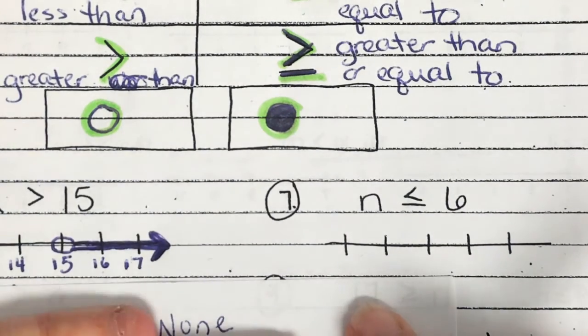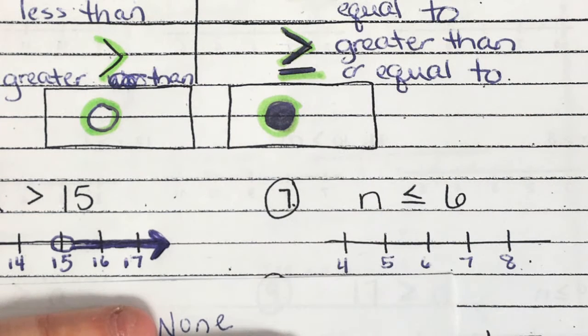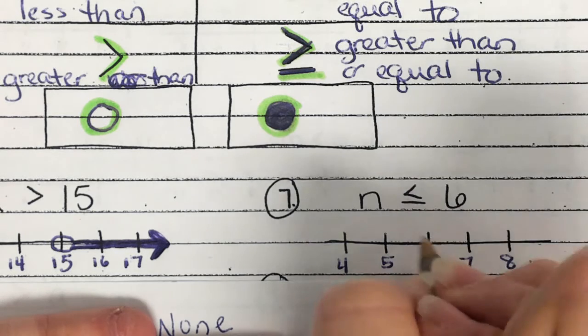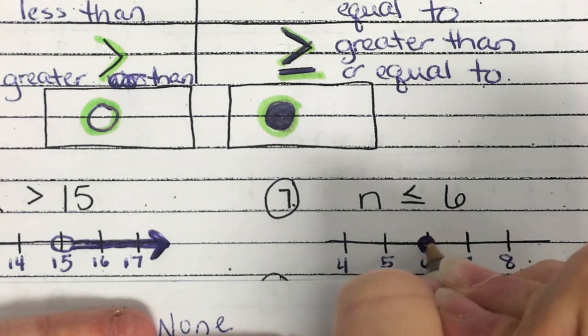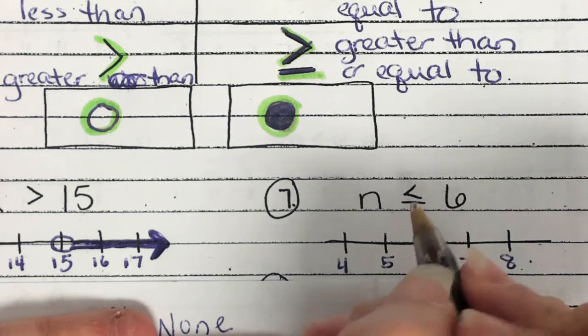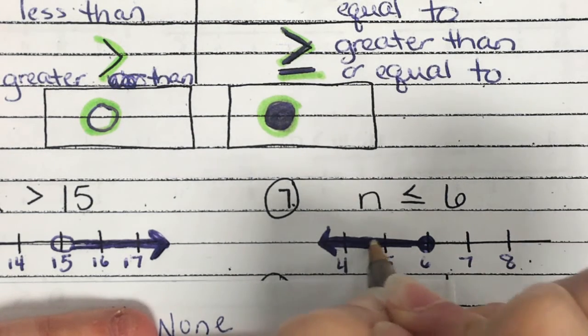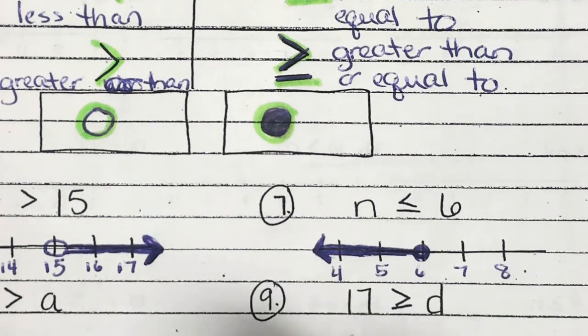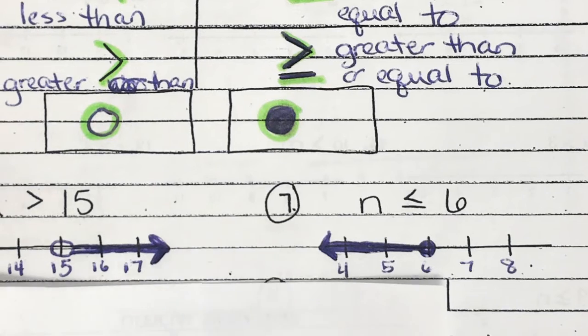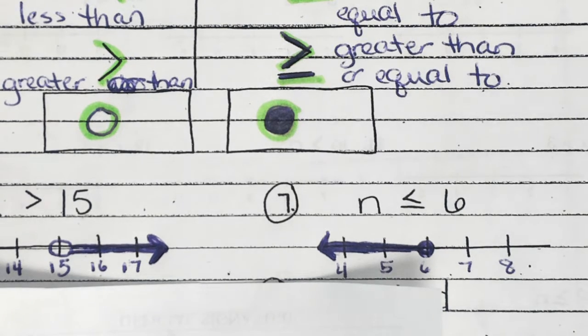Now, we're going to shade the end of the number line that would fit where x is. So, if x is greater than 15, which numbers are greater than 15? 16 and 17. So, we want to shade, kind of darken in this end of the number line. And you're just darkening it in. That means anything past that can be an answer. 18, 19, 20. Number 7. This one says, n is less than or equal to 6. So, step 1. Number your number line. 6, 7, 8, 5, 4. Closed or open circle? Closed.